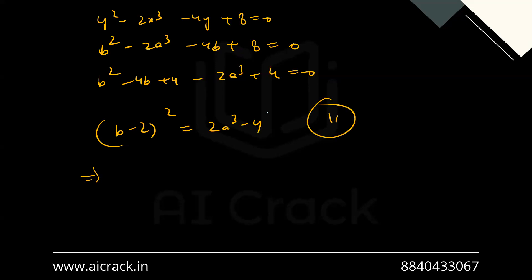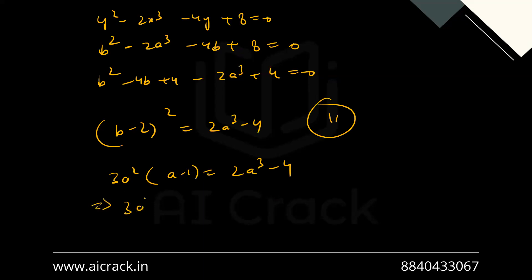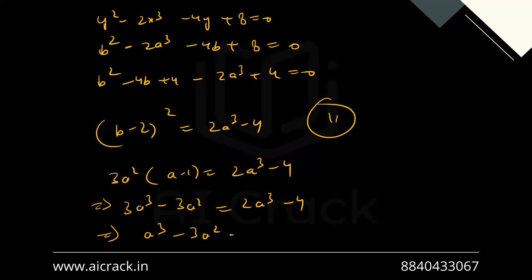Equating the two expressions for (b - 2)²: 3a²(a - 1) = 2a³ - 4, giving 3a³ - 3a² = 2a³ - 4, which simplifies to a³ - 3a² + 4 = 0.